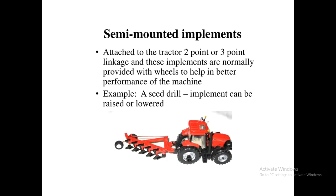The second type is a semi-mounted implement. The implement is attached to the tractor using either a two-point or three-point linkage. The implement has wheels and is partially dependent on the tractor for power supply. A seed drill attached to a tractor is an example of a semi-mounted implement.